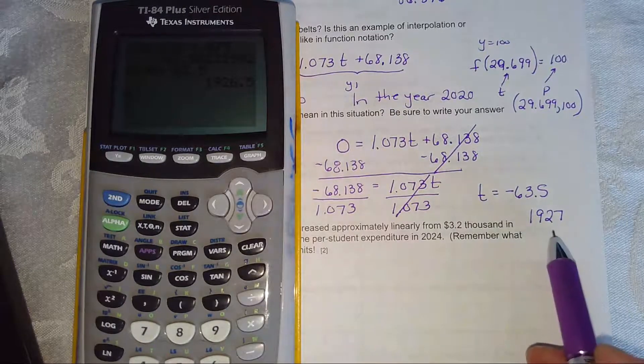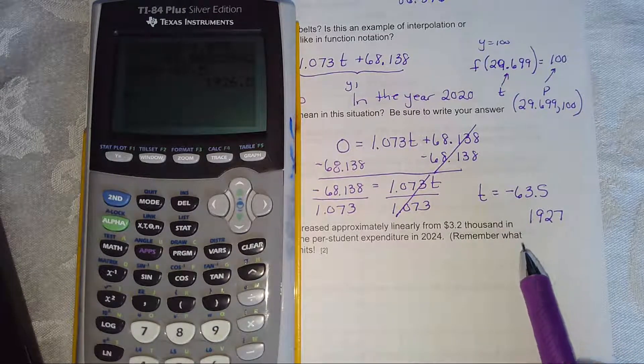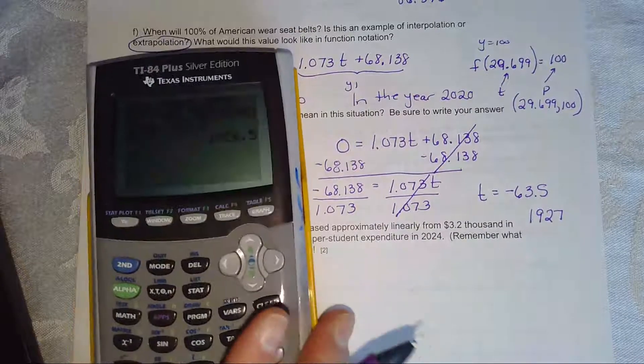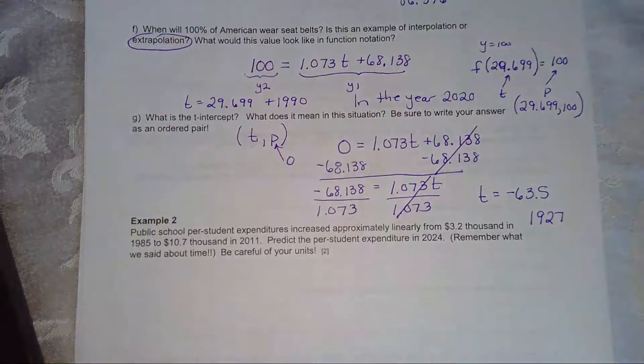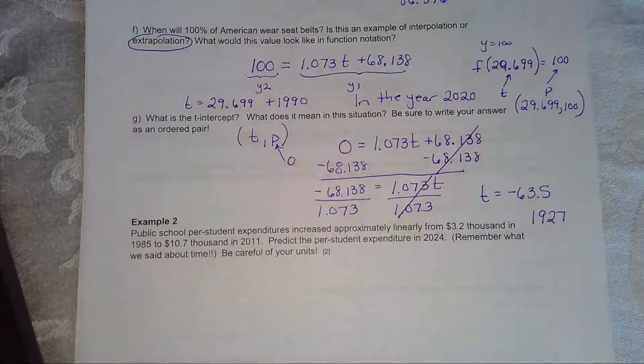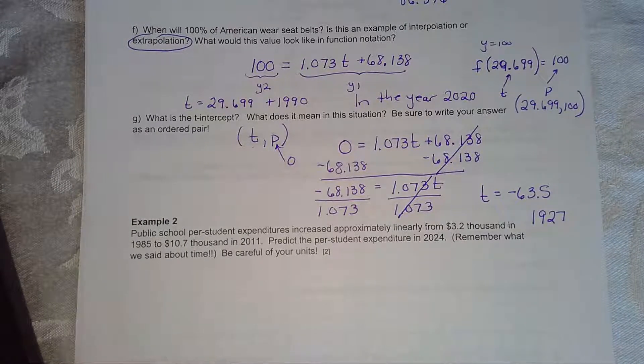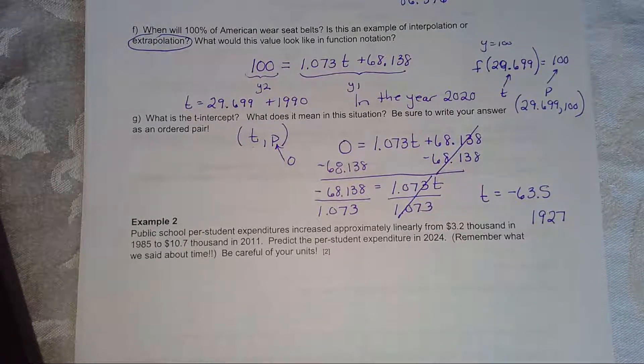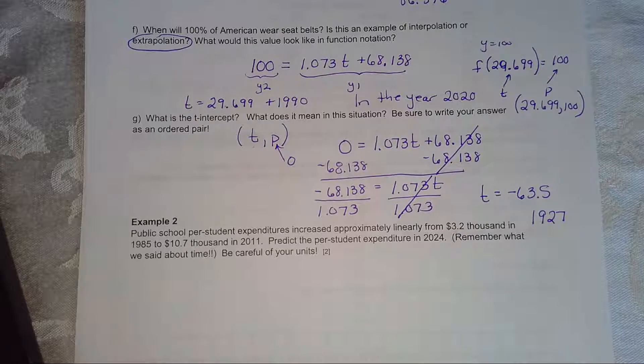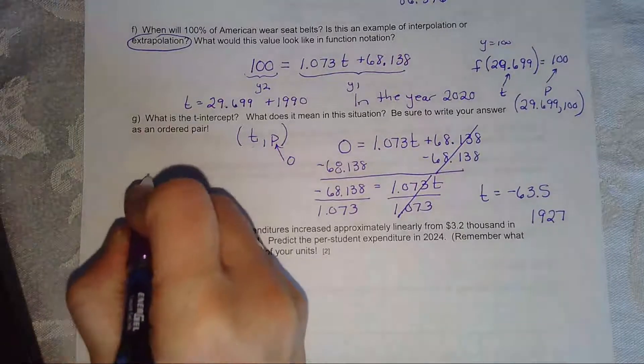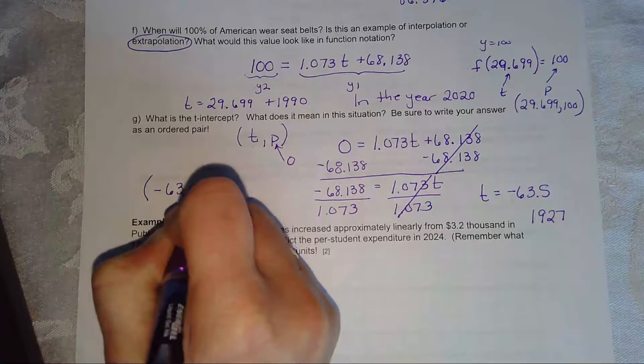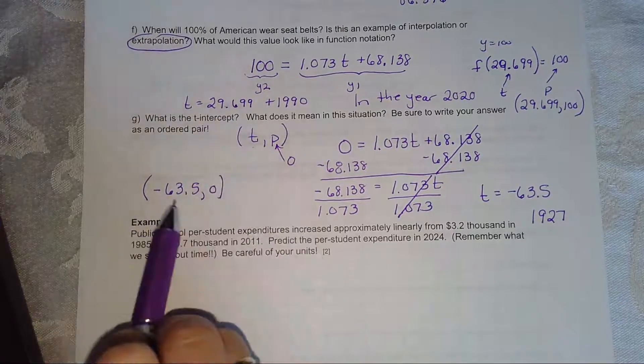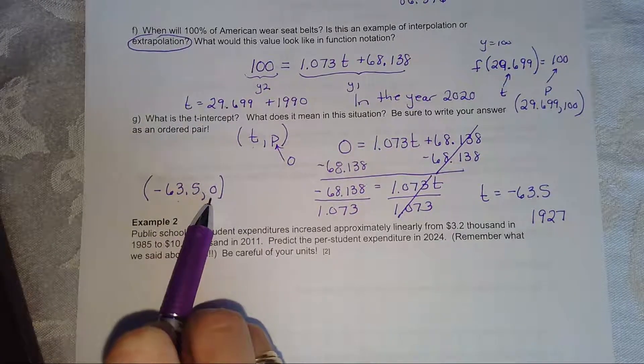So in the year 1927, according to this model, nobody wore seat belts. Which actually might be true. I'm not sure what the seat belt situations were in the Model T. That's when those were out. Pretty sure those were out by then. Let's write it as an ordered pair. So negative 63.5 comma 0. Time and then percentage.